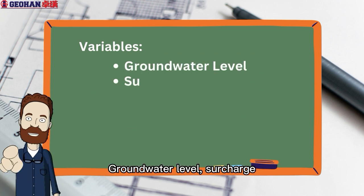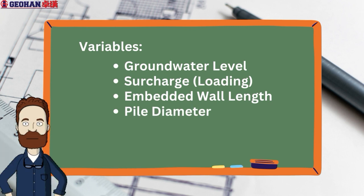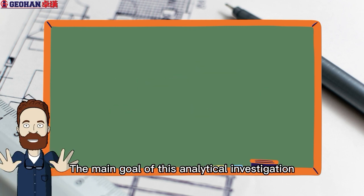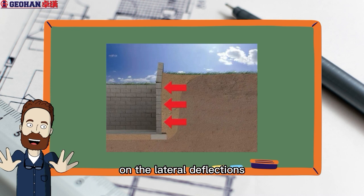This analysis involves the manipulation of four key variables: groundwater level, surcharge, the length of the embedded wall, and the diameter of the piles. The main goal of this analytical investigation is to explore and understand the influence and consequences these specific variables have on the lateral deflections exhibited by the CBP wall.